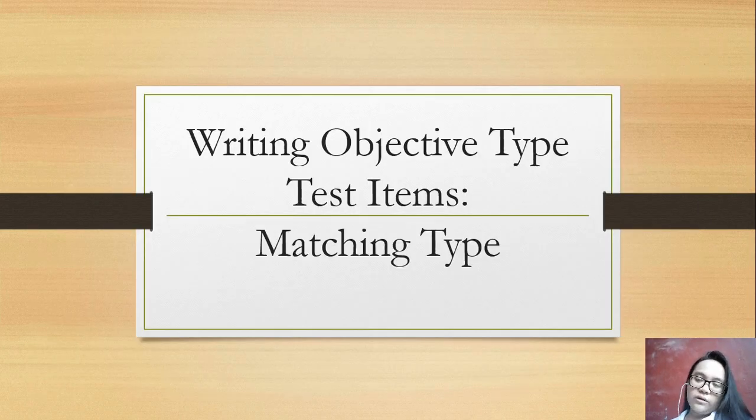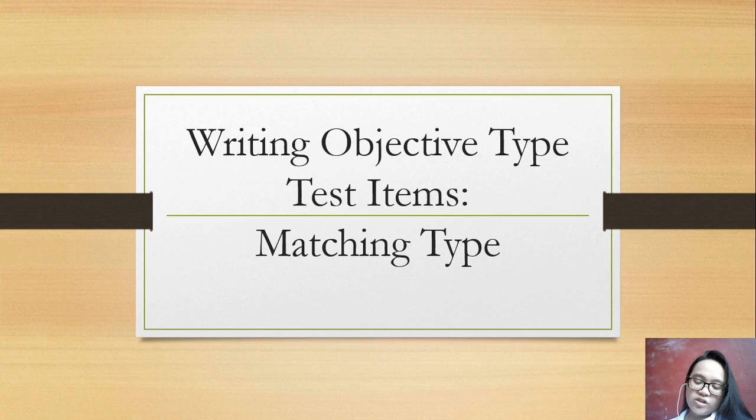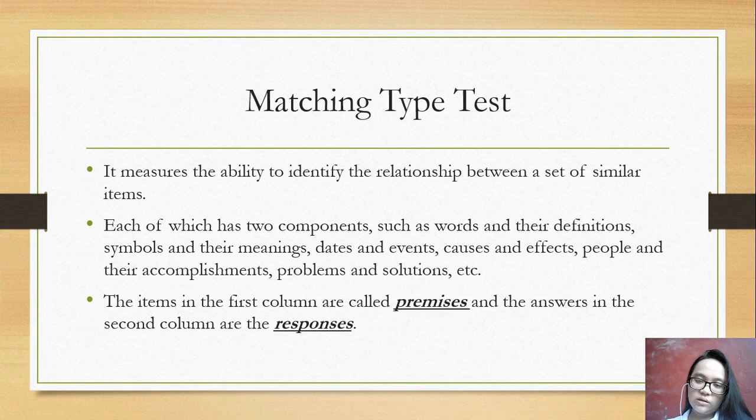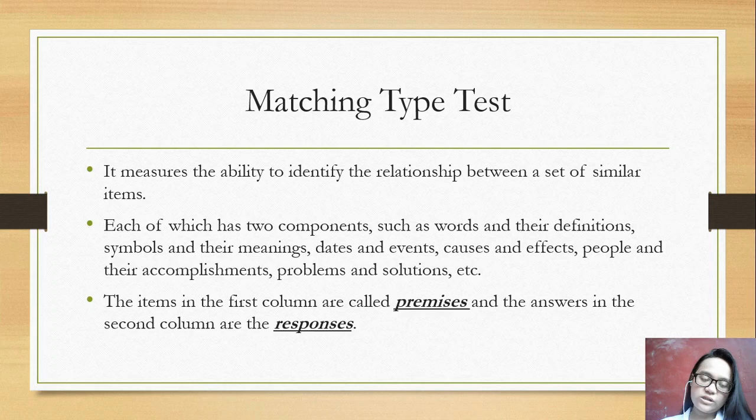Next, writing objective type test items is matching type. So matching type test measures the ability to identify the relationship between a set of similar items. Each has two components such as words and their definitions, symbols and their meanings, dates and events, causes and effects, people and their accomplishments, problems and solutions, etc. So the items in the first column are called premises, and the answers in the second column are the responses.